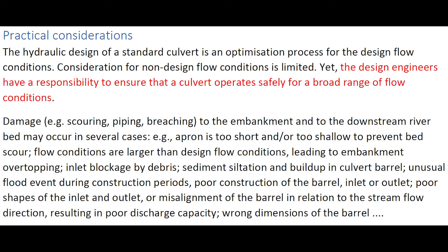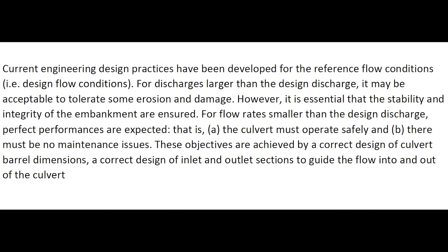The hydraulic design of a standard culvert is an optimization process for the design flow conditions. Yet the design engineers have a responsibility to ensure that the culvert operates safely for a broad range of flow conditions. Damage to the embankment, to the downstream riverbed, or to the culvert may occur for several cases. Current engineering design practices have been developed for the reference flow condition. However, engineers have to check for known design flow conditions. For flow rates smaller than the desired discharge, perfect performance is expected, while for discharges larger than the desired discharge, some damage might be acceptable, but the stability and integrity of the embankment must be ensured.